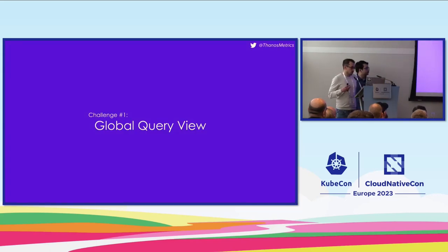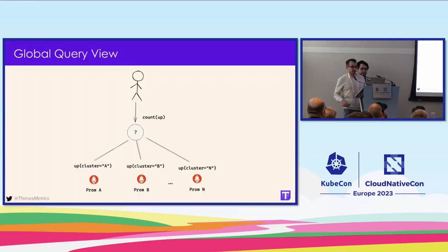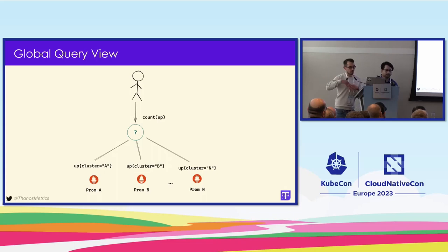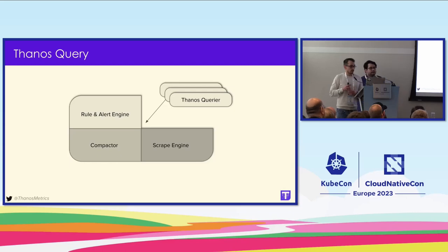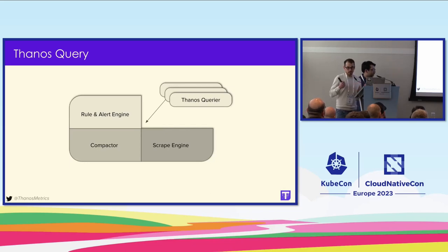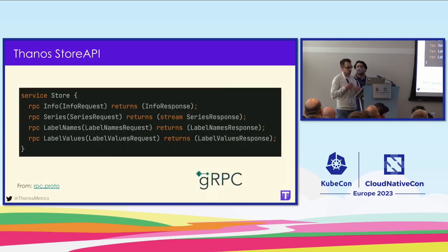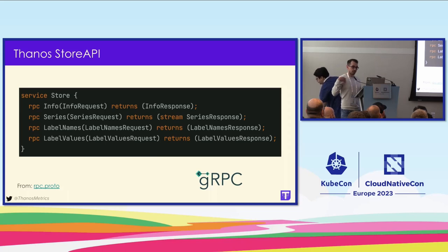Starting with global view — how Thanos solves this problem. If we were to have a set of Prometheus instances and execute a query, we really want that query executed across the entire fleet. The way Thanos does it is by extracting the PromQL module from Prometheus and bundling it into a standalone service that can be run and scaled independently. In addition to this, Thanos defines something called the Store API, including a Series RPC that the querier can use to request time series data from any component.